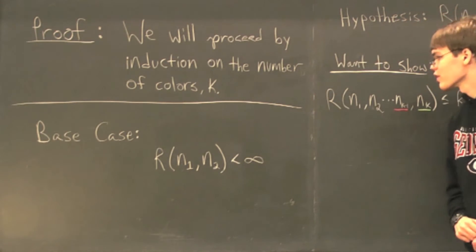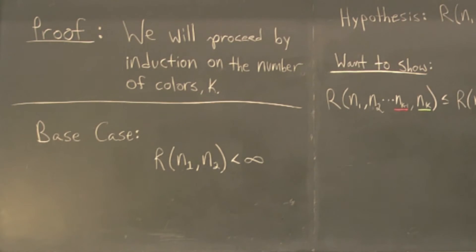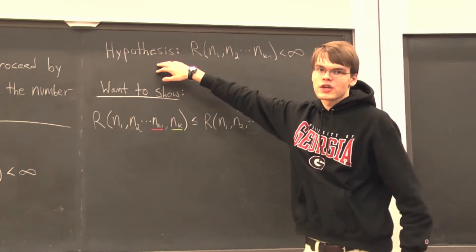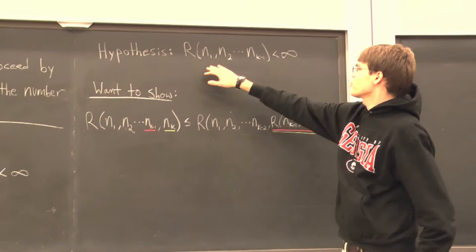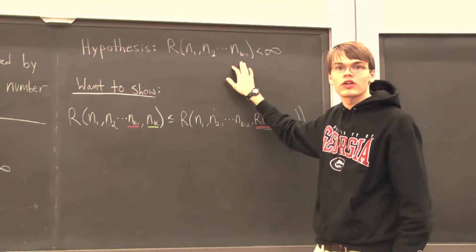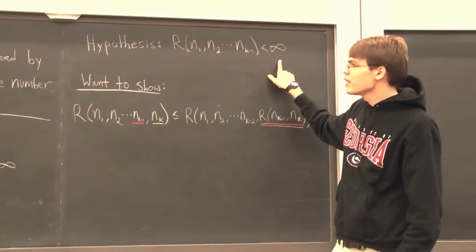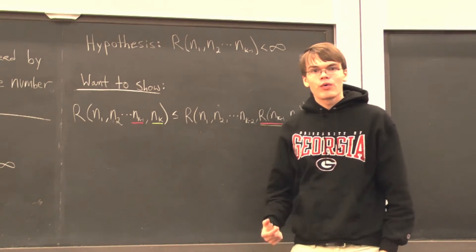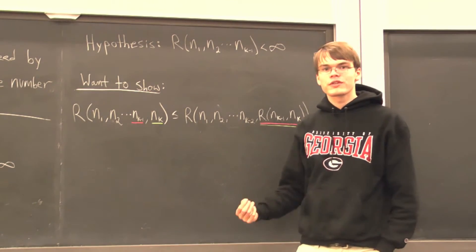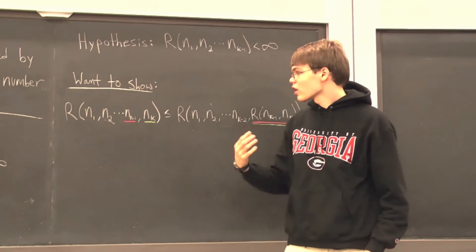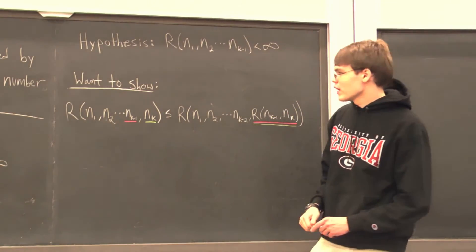For our induction hypothesis, we assume that Ramsey numbers using k minus 1 colors are finite. Now, for our induction step, what we want to show is that the Ramsey numbers using all k colors are going to be finite.